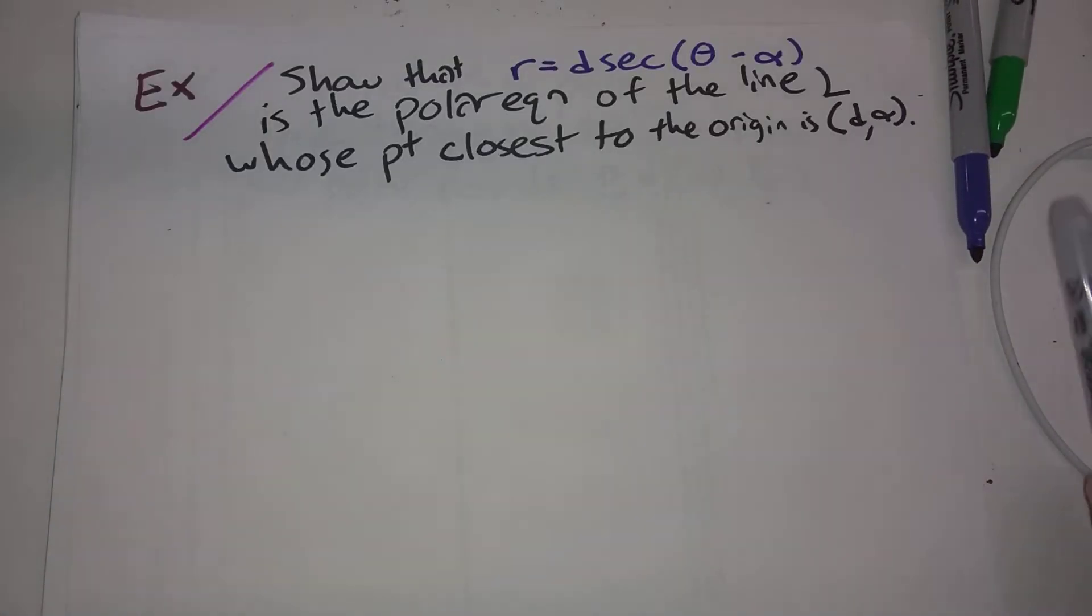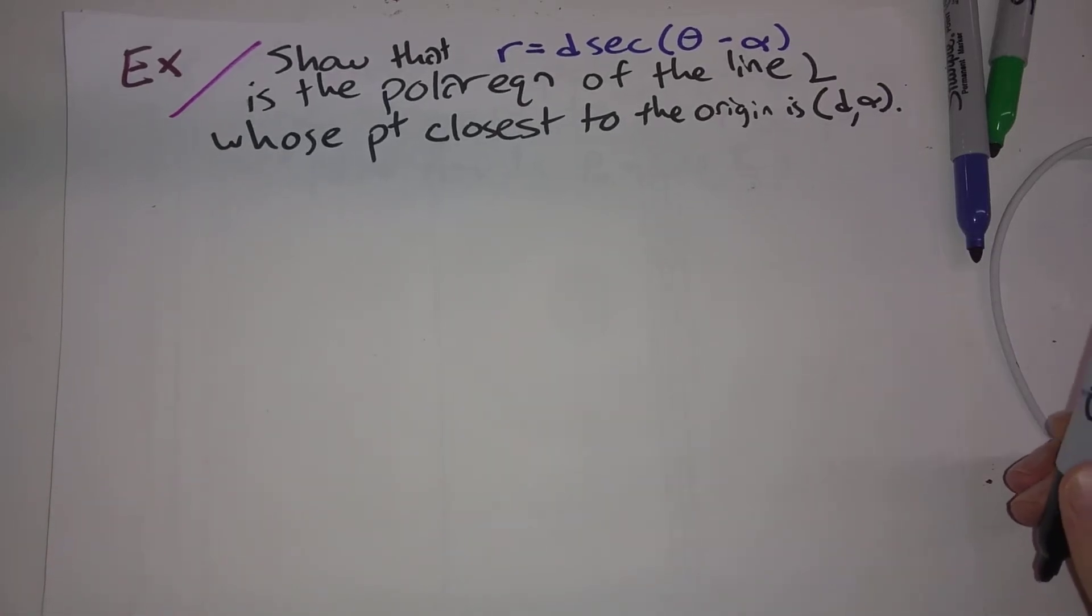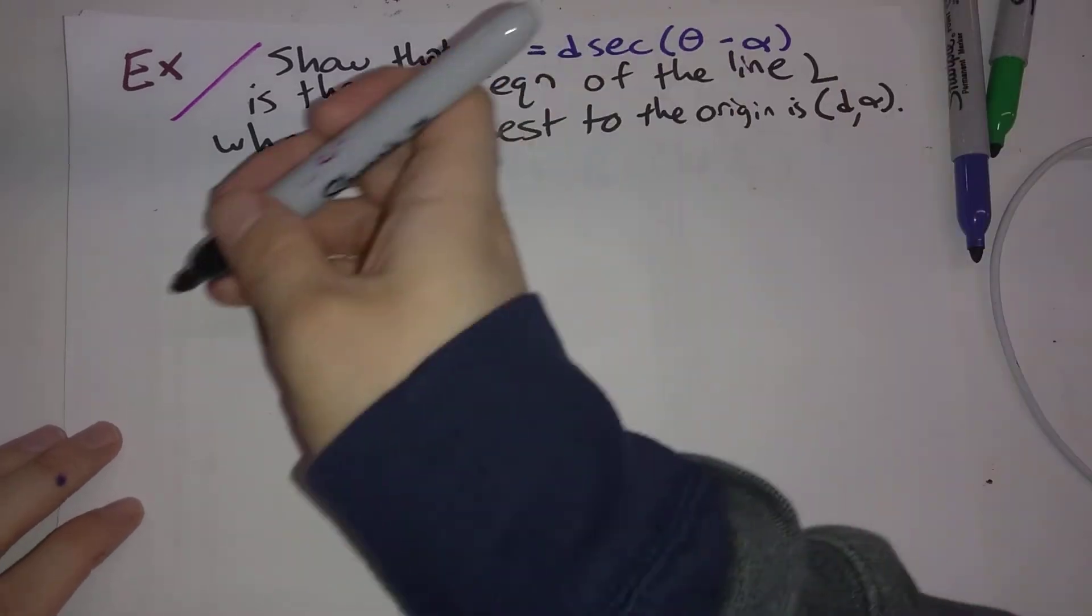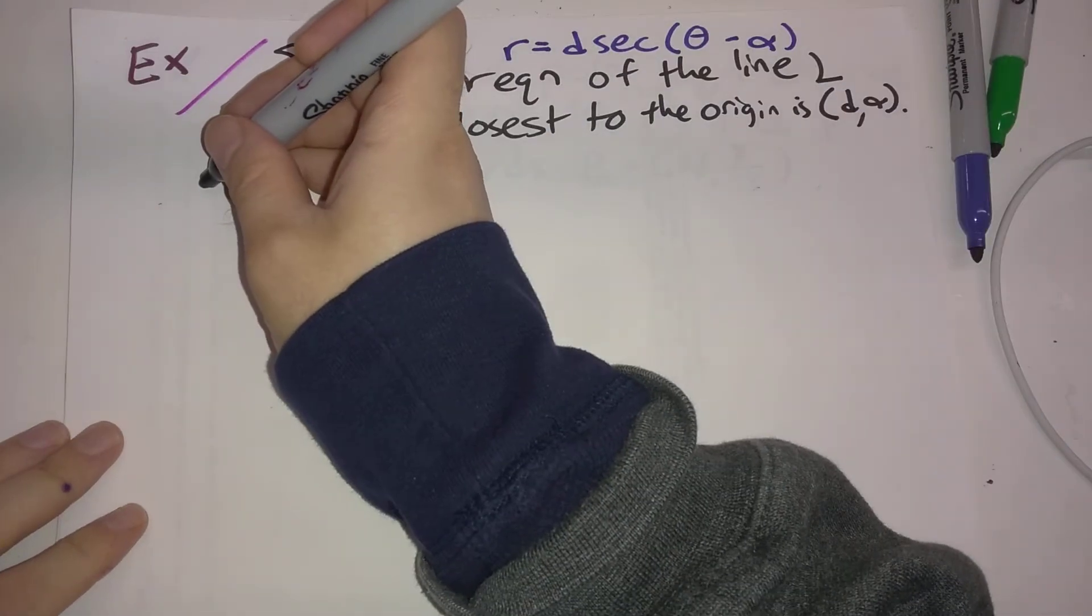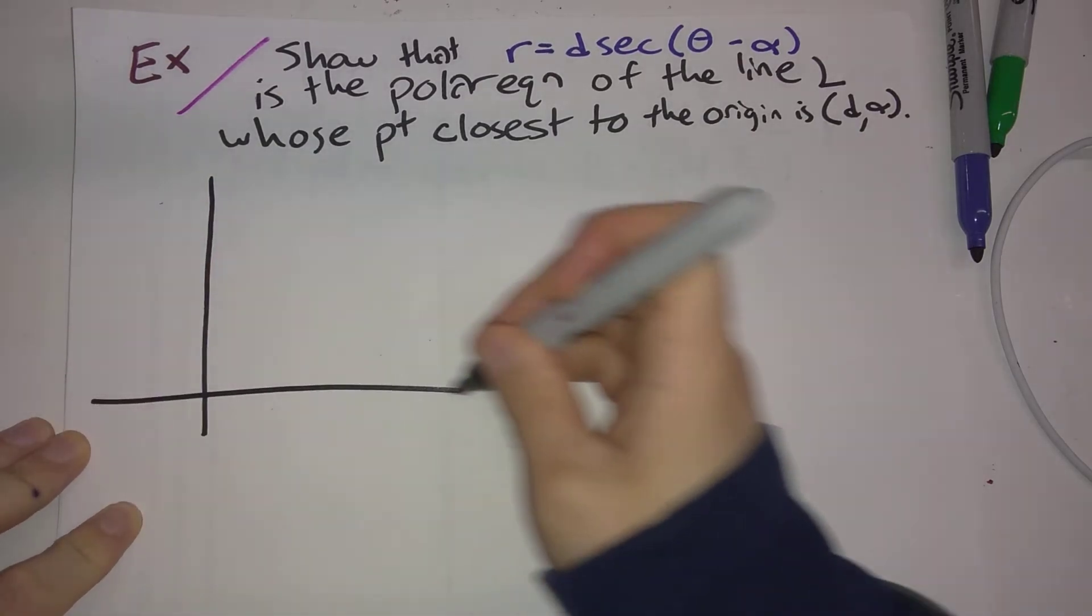Okay, here's a slightly more interesting one. Show that R is equal to D times secant of theta minus alpha is the polar equation of the line L. This point closest to the origin is D, alpha, where that's written in polar coordinates.